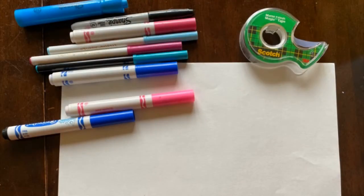To make your own sign here are all of the materials that you'll need. You'll need a blank piece of paper, any kind of clear tape, and any color markers that you'd like. These are just the ones I chose.